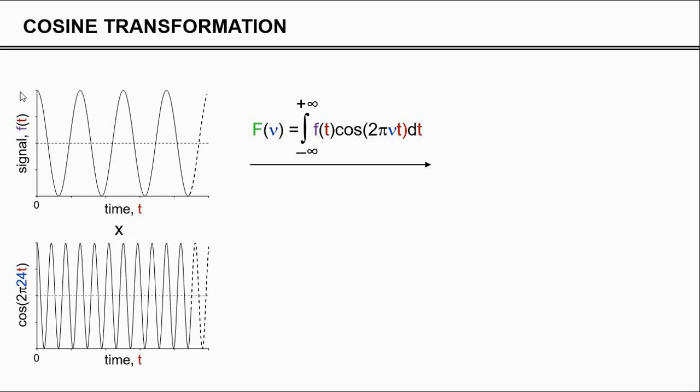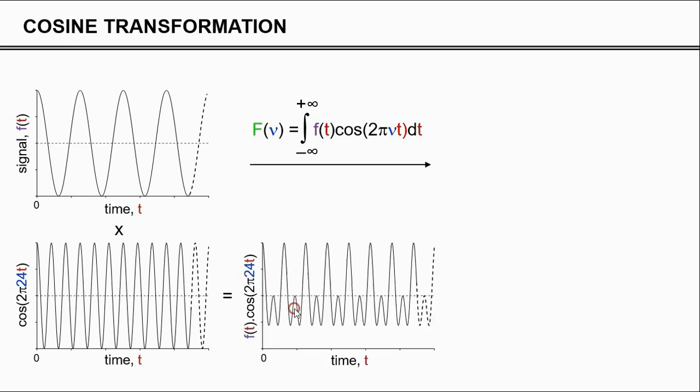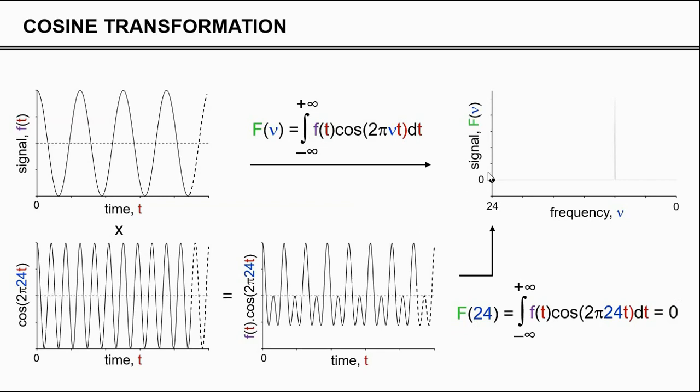Here we have our raw experimental data, F(t). We multiply it with a first test frequency. In this case, we test out the signal at 24 Hz. We multiply the two, and the product looks like this. Then we need to integrate over that product over all times. You basically just add all of the values together, and then you will find that the integral, the sum, is actually zero. That value is now assigned to the frequency 24 Hz in the spectrum.